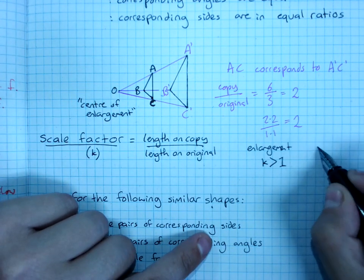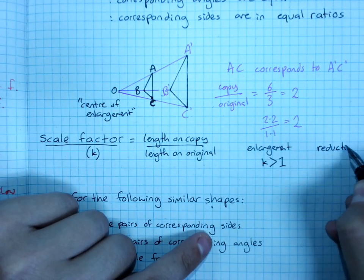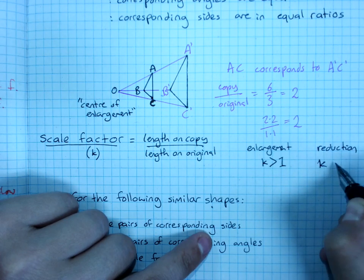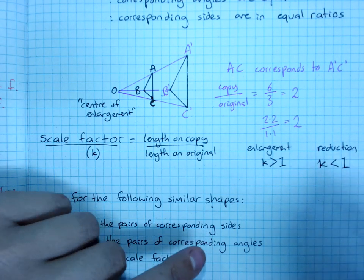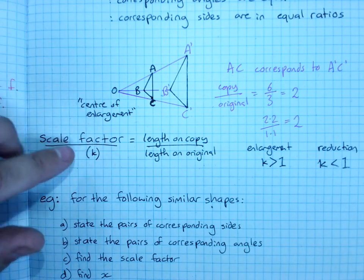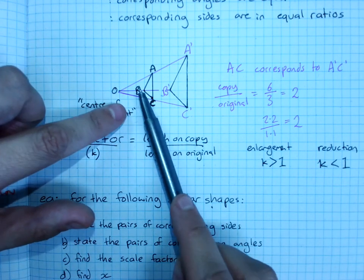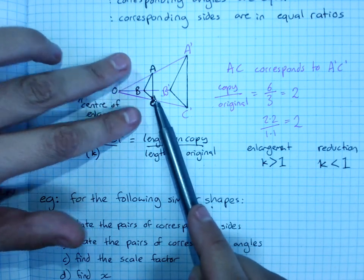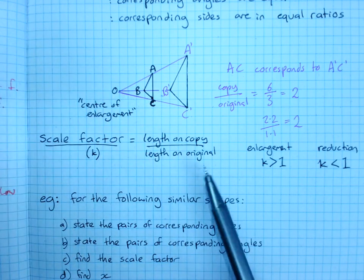If it's a reduction, K will be less than one, a fraction between zero and one. Because if I multiply each side here by, say, one half, it will shrink down in size.